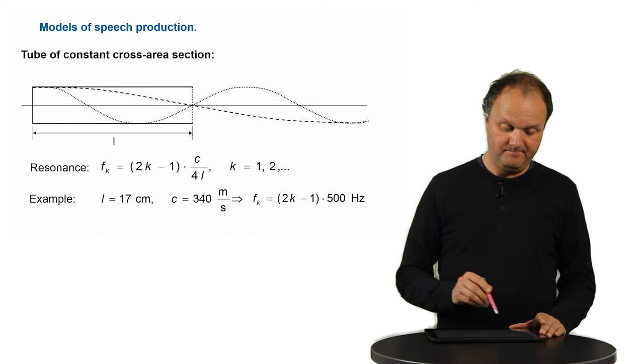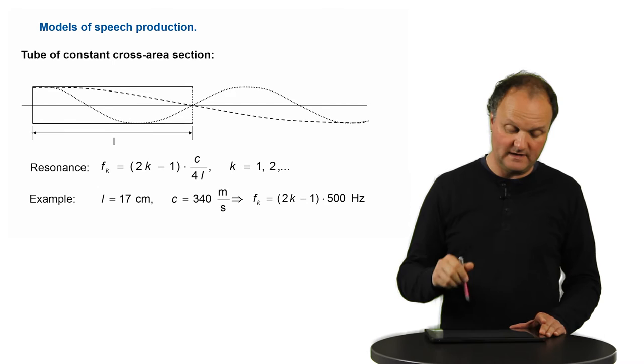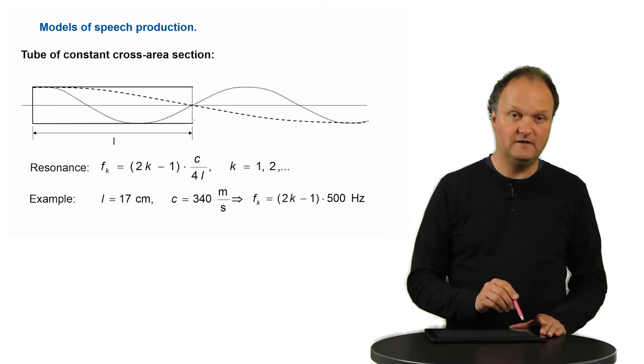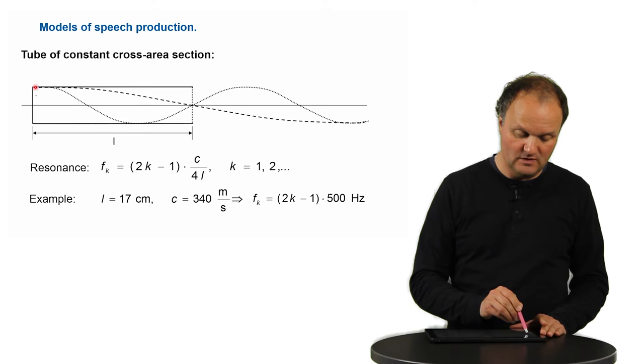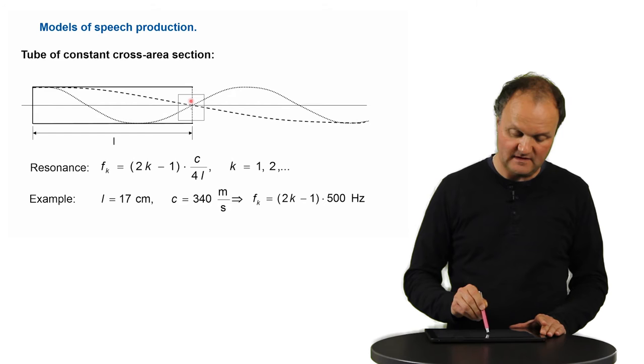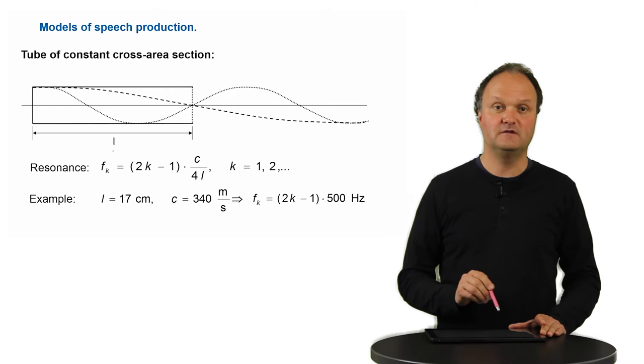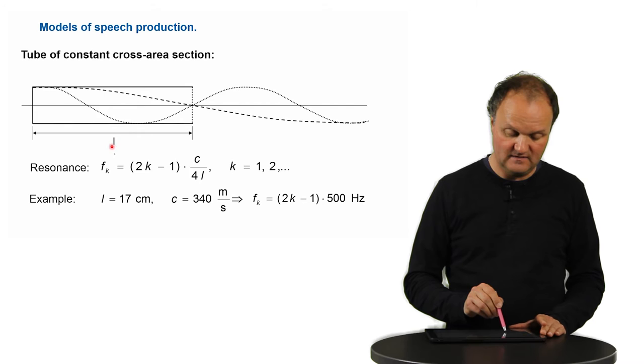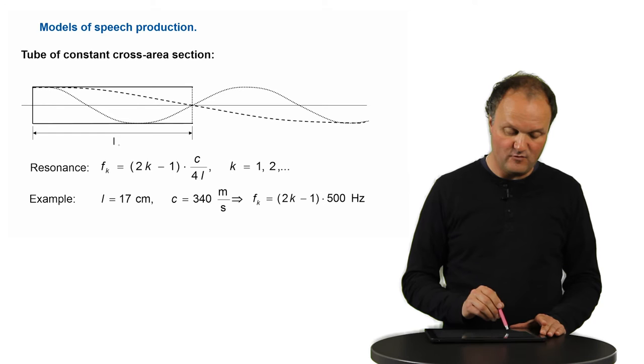In such a tube, we have a hard ending at the glottis, that's what I already explained, and we have a sonically soft ending at the mouth because the air pressure wave can go out easily. In such a tube, there are different waveforms which can exist, which should all show a maximum at this end of the sound pressure and a minimum of the sound pressure at this end. The first such waveform is this one, where a quarter of the wavelength corresponds to the length of the tube. The second such waveform is this one, which is shown with a dotted line, where three quarters of the wavelength just fit into the length of the tube. And so you will see more and more waveforms for which the resonance frequency is an impair multiplicative of this term.